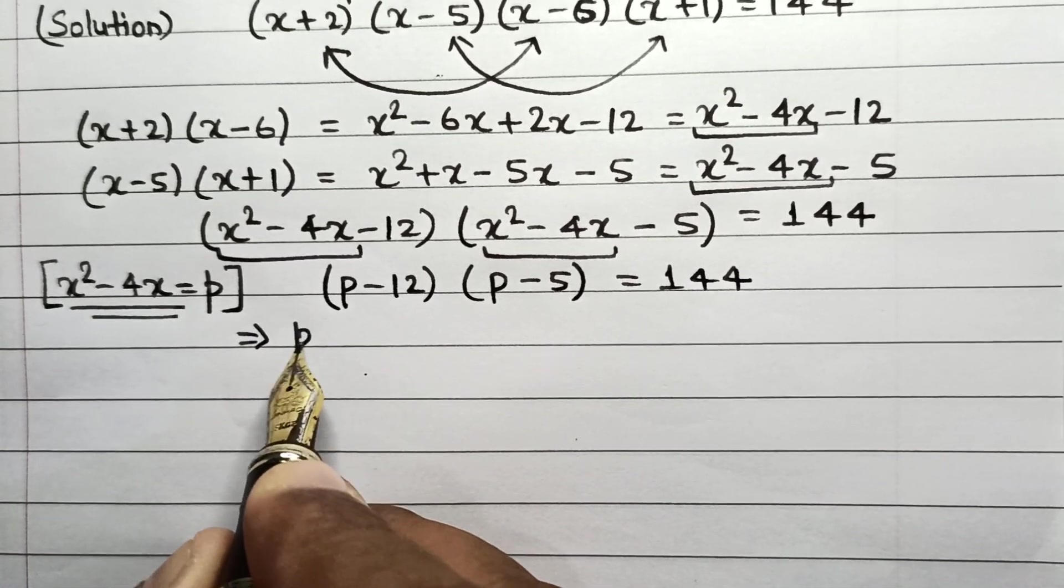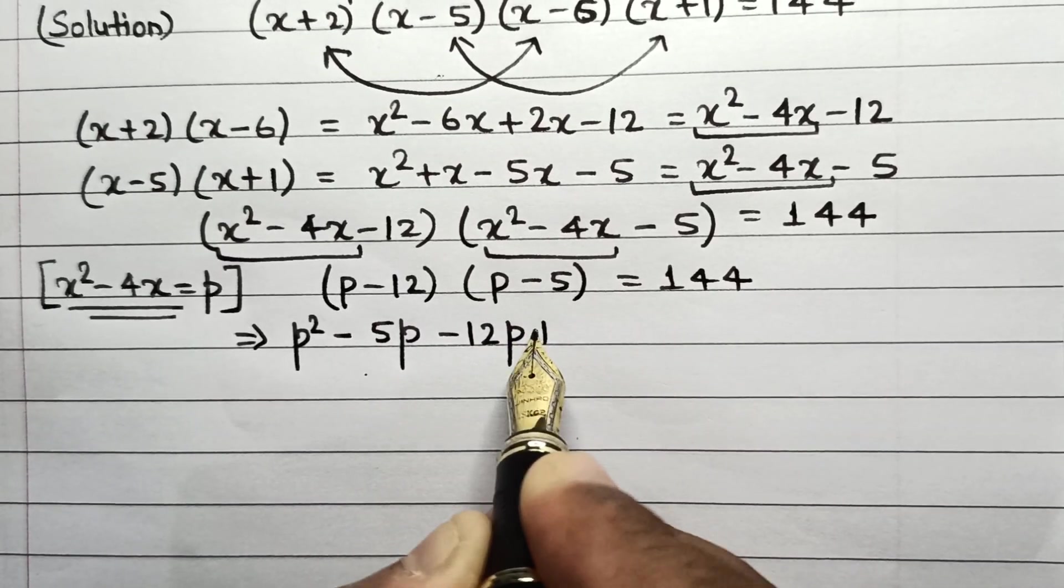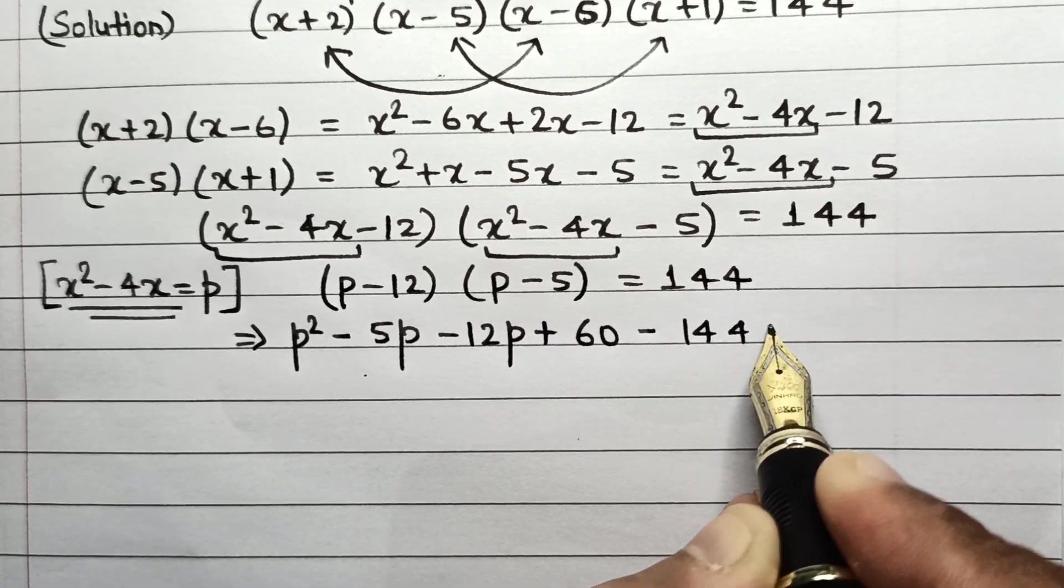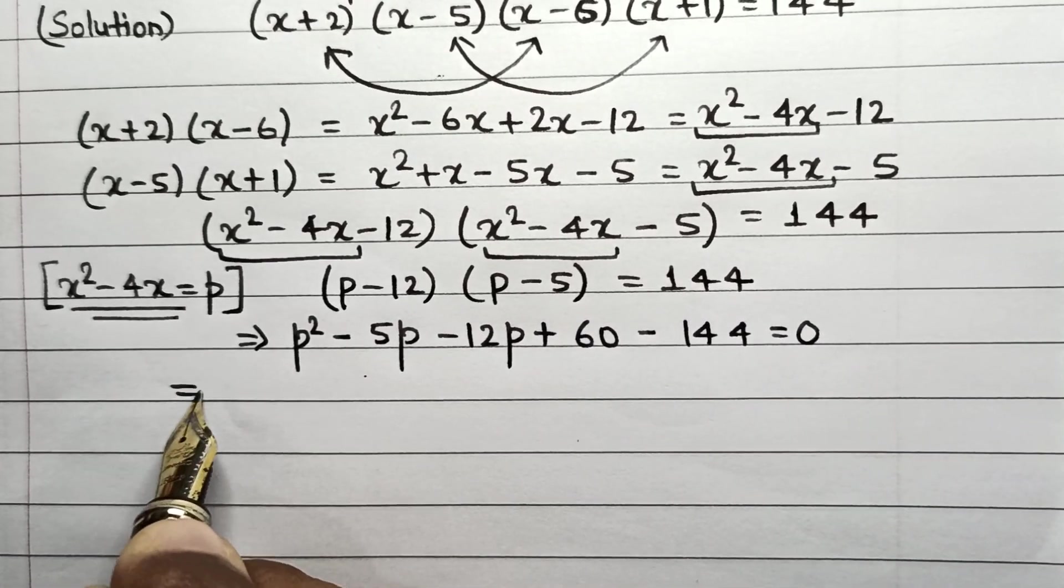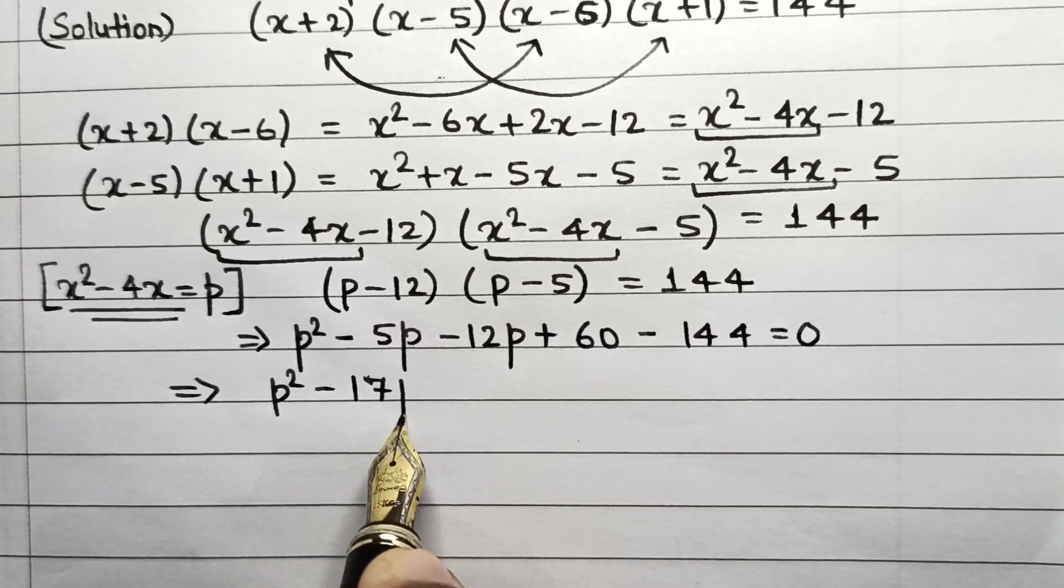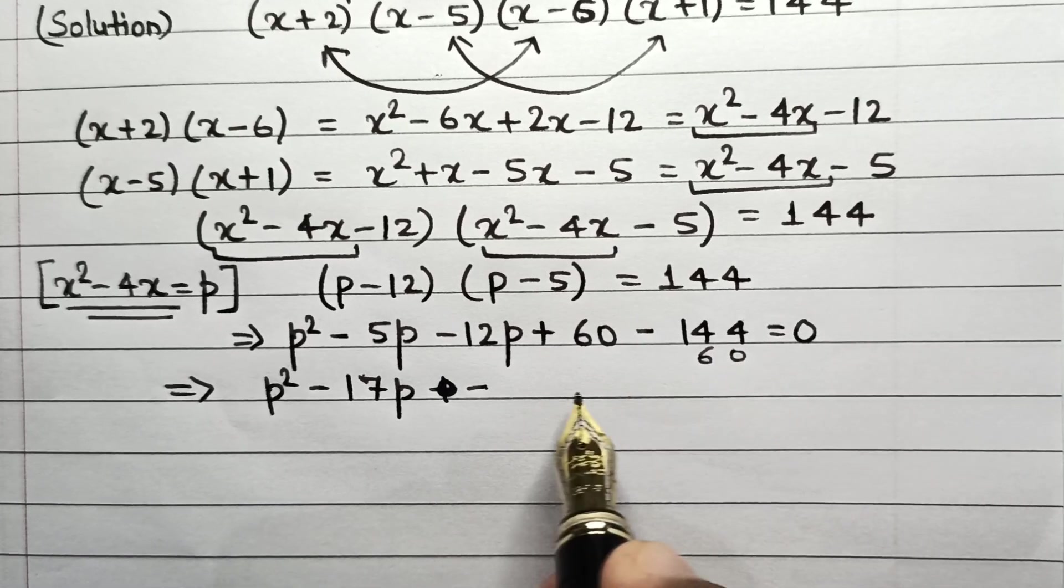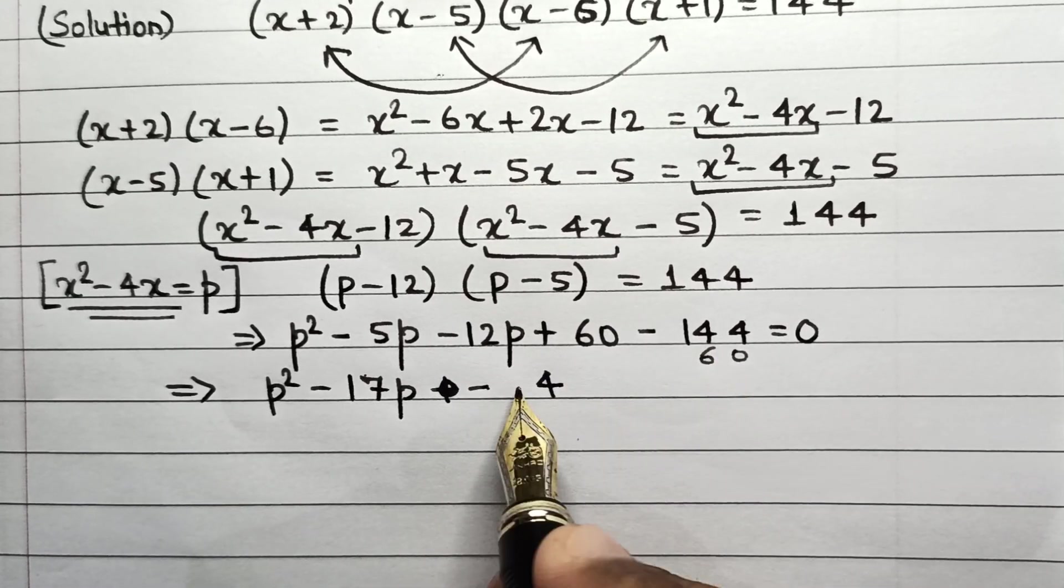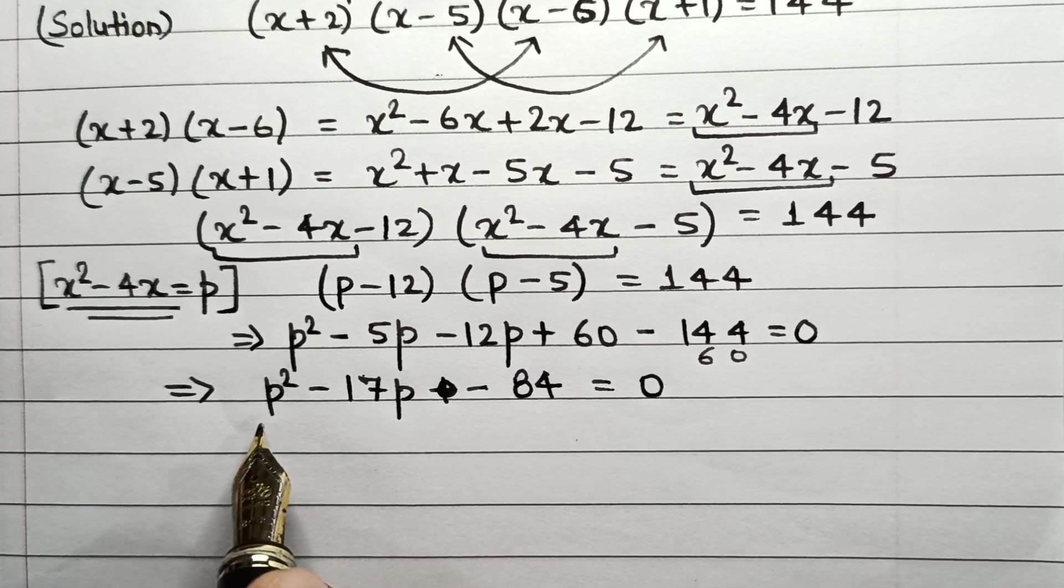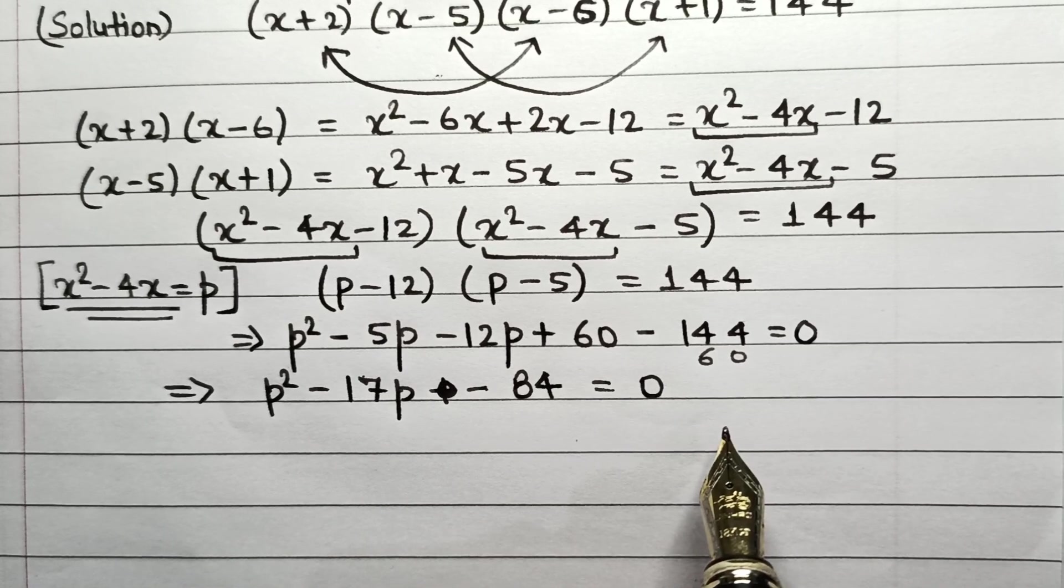So this will be p² - 5p - 12p + 60, and let us shift this 144 to this side. This will be equal to 0. So this implies that p² - 17p - 84 = 0.